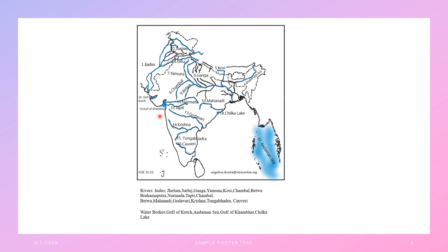Here we have the Gulf of Khambat and above it the Gulf of Kutch. When marking tributaries, remember that River Kosi must end till it reaches the Ganga, Yamuna ends where it reaches the Ganga, and Chambal ends till it reaches Yamuna. You must remember: when a river enters another river, it becomes part of that river. So you need to take note of these boundaries.